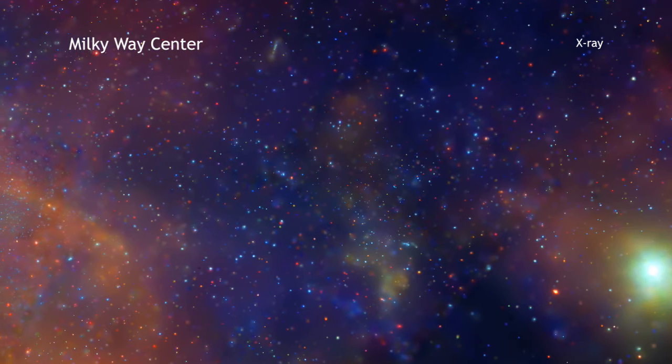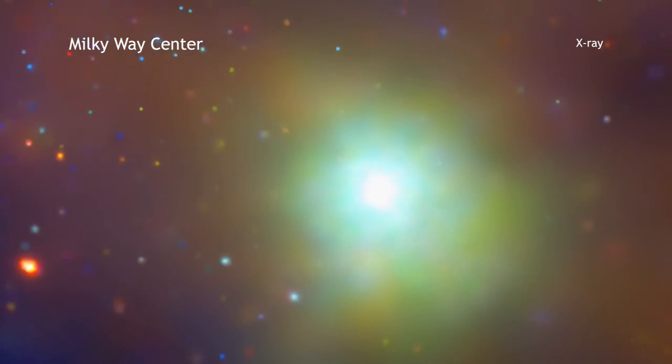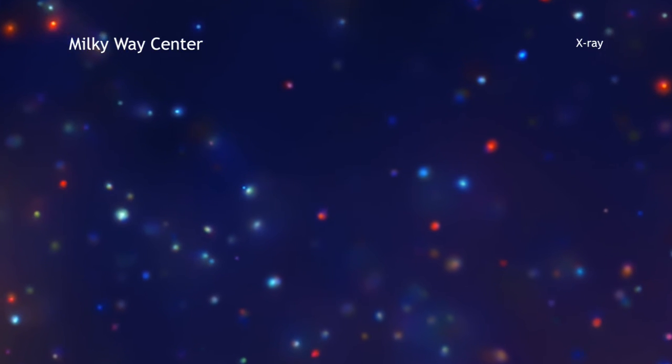In this new and deep image from Chandra, red represents lower-energy X-rays, green shows the medium range, and blue indicates the higher-energy X-rays Chandra can detect.